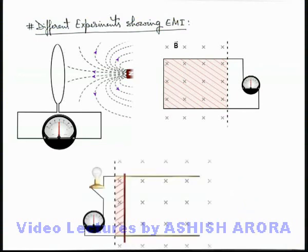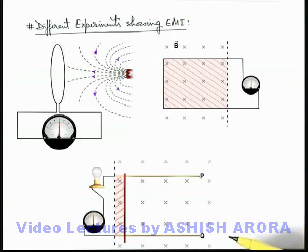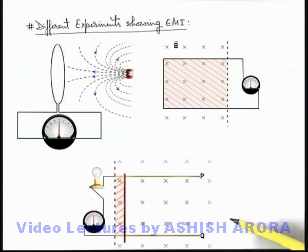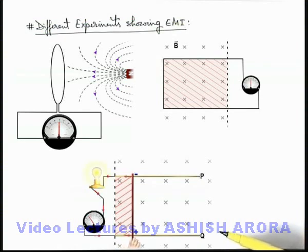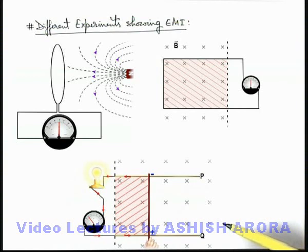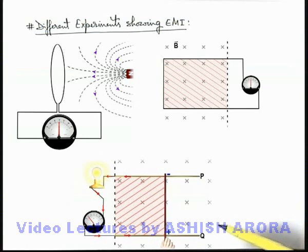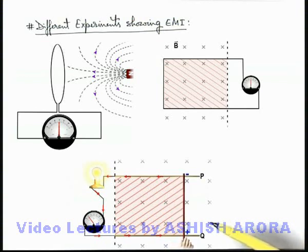Here you can see another experiment in which there are two rails P and Q. These are smooth rails, and to these rails a bulb and a galvanometer is connected. The rails are in a uniform magnetic field directed into the plane of the paper, and a rod A-B is also placed on them. If we start moving this rod A-B, it will start cutting the magnetic flux of this magnetic field. The total magnetic flux associated with the loop on the left side of the rod is increasing due to the motion of the rod, because of which an EMF is induced. The bulb is glowing and the galvanometer is showing a deflection.